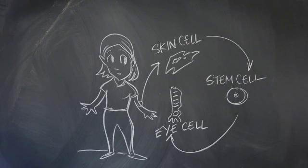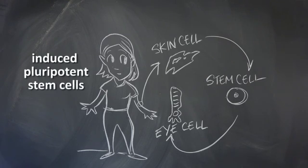Such as heart, eye or brain cells. These are called induced pluripotent stem cells.